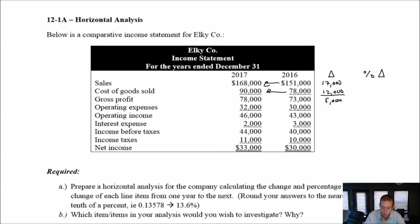30 to 32, our operating expenses grew by 2,000. 43 to 46, our operating income grew by 3,000. I could have also gone five minus two is three. Three to two, our interest expense shrunk by 1,000. 40 to 44, our income before tax grew by 4. Income taxes grew by 1, and our net income grew by 3,000. So there we have our changes.